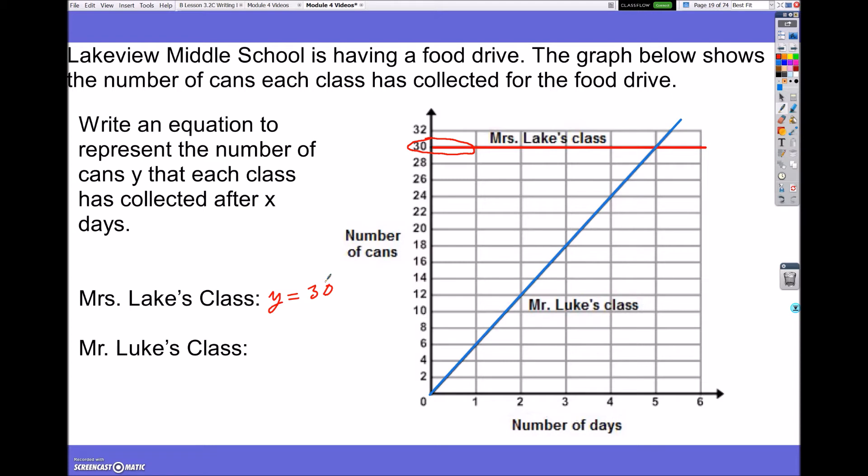Now, if we look at Mr. Luke's class, Mr. Luke's class starts at the origin, which is (0, 0), and it shows that it goes up 6 cans every one week. So, once again, it goes up 6 cans every one week, and then one more time, up 6 cans every one week.